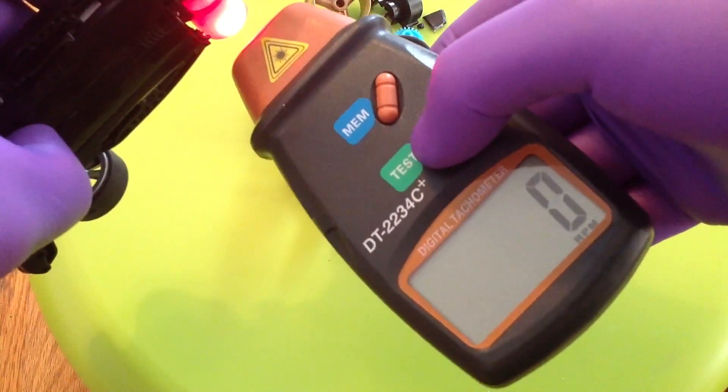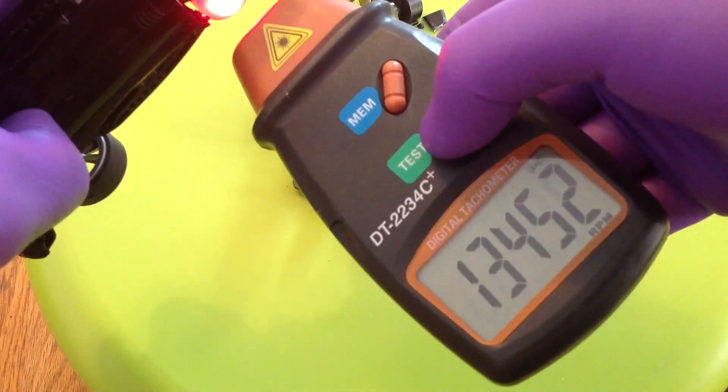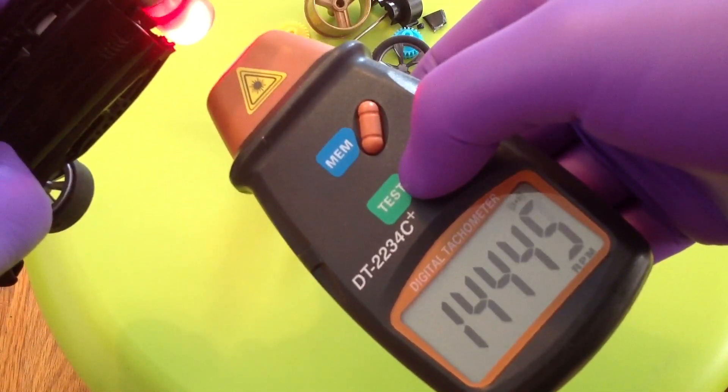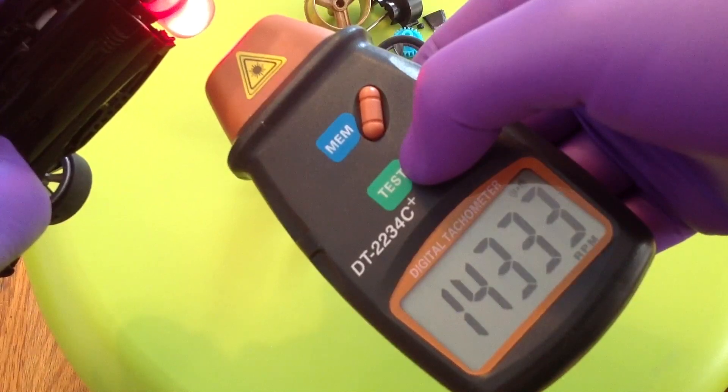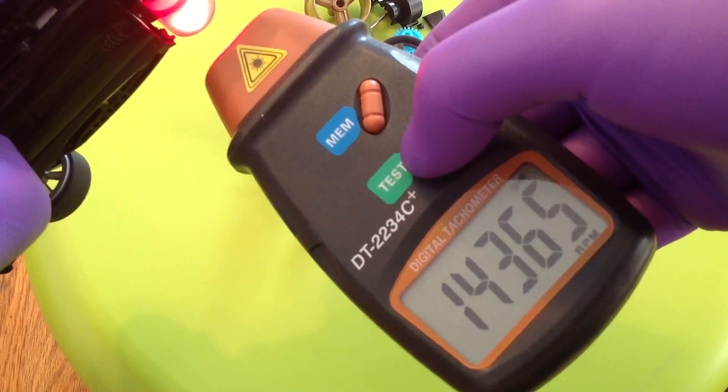This first test is on a standard box-stock motor with a single shaft. As you can see, the RPM is topping out at 14,778 RPM.